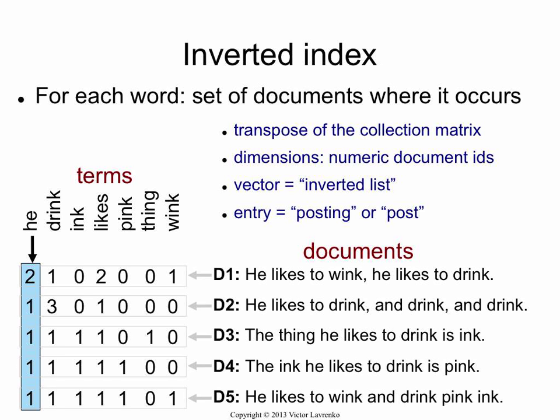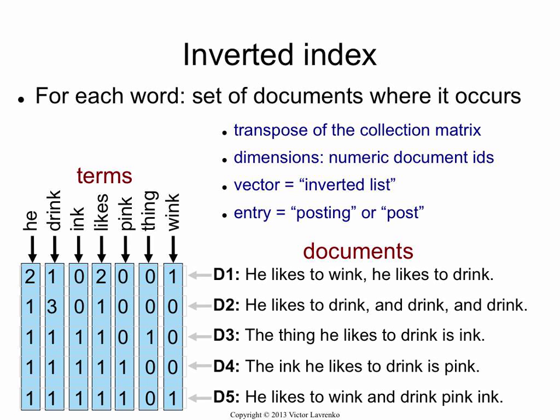What does that mean? You basically look at a column, and the column tells you for each word in which documents it occurred and how many times — really straightforward. So the word 'he' occurred in every document: twice in the first document, and once in every other document. Other words like 'thing' only occurred in one document, so that vector is mostly zeros, with the exception of D3, where it has a count of one.